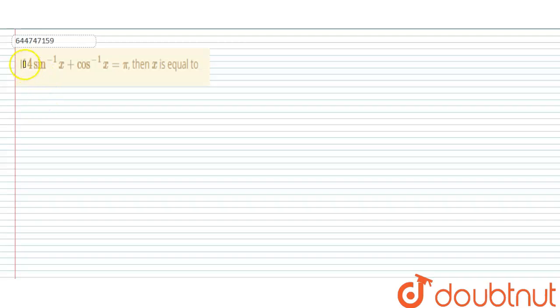Hello students, in this question, if 4 sin inverse x plus cos inverse x is equal to pi, then x is equal to what? So let's first write this expression: 4 sin inverse x plus cos inverse x is equal to pi.